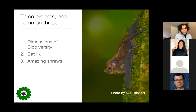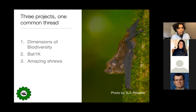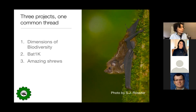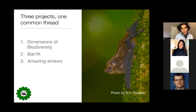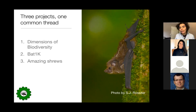The first project is called Dimensions of Biodiversity, a six-year project I'll describe in some detail. Another project, begun over the last few years with a big goal, is called BAT1K. Finally, I'll talk about one of the more recent projects funded by Human Frontiers, about Eurasian shrews, which have some amazing traits worth studying in great detail.